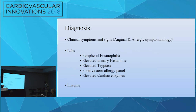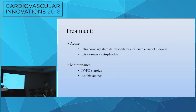Diagnosis is based on clinical symptoms and signs. Supportive labs include peripheral eosinophilia, elevated urinary histamine, elevated tryptase, positive aeroallergen panel, and elevated cardiac enzymes. Imaging is also based on angiographic features that can suggest Kounis syndrome. Acute treatment is intracoronary steroids, vasodilators, calcium channel blockers, and intracoronary antiplatelet therapies. Maintenance should be done with IV or PO steroids and antihistamines.